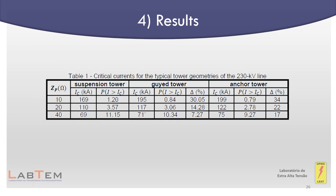In this table it is possible to observe the critical current values for each tower structure, along with the probabilities that the lightning current exceeds the critical current. The parameter delta indicates the relative decrease of this probability for Gaia and anchor towers in comparison with suspension towers. Decreases ranging from about 7% to 30% and 17% to 34% are observed respectively for the Gaia and anchor towers. The observed difference can impact the calculation of the performance of the entire line.